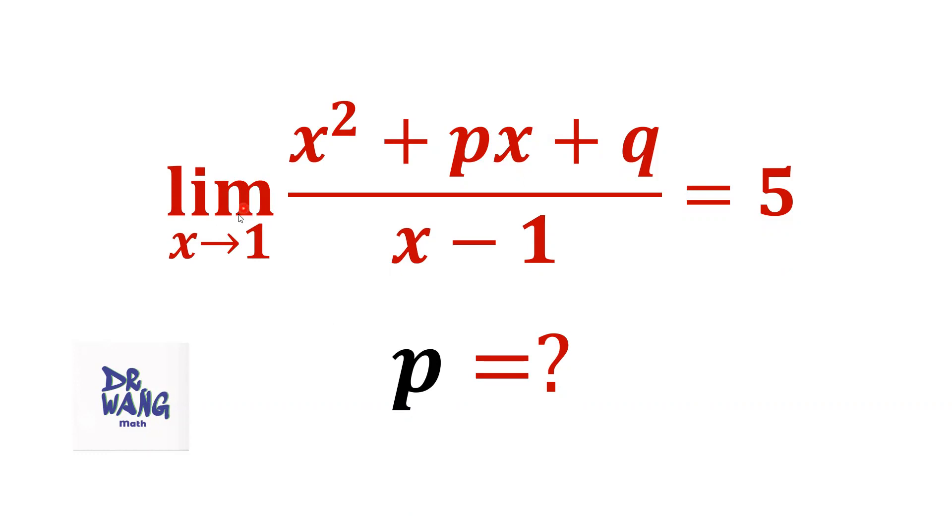If limit as x goes to 1, x squared plus px plus q over x minus 1 equals 5, what is the value of p?